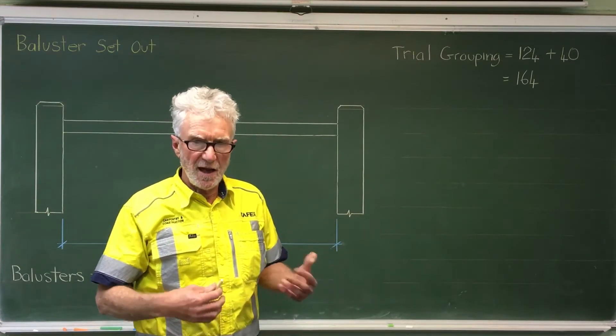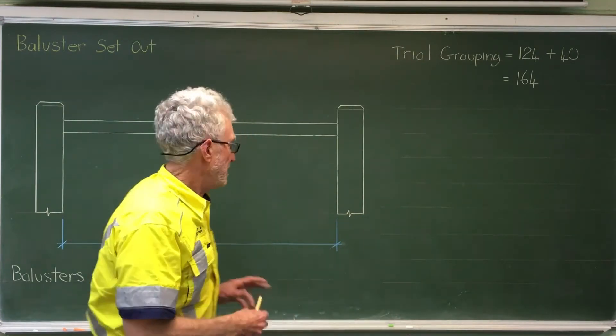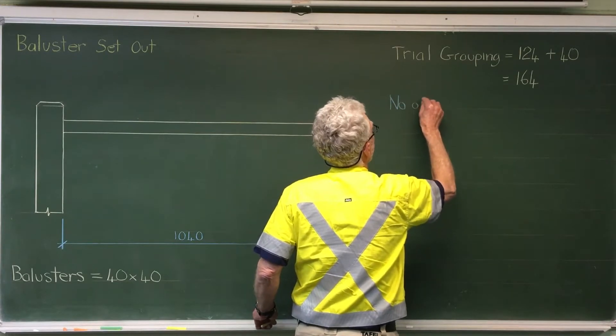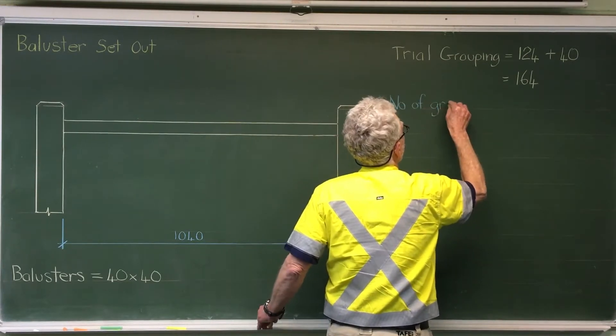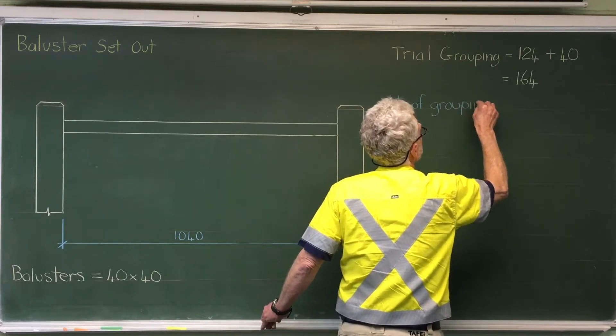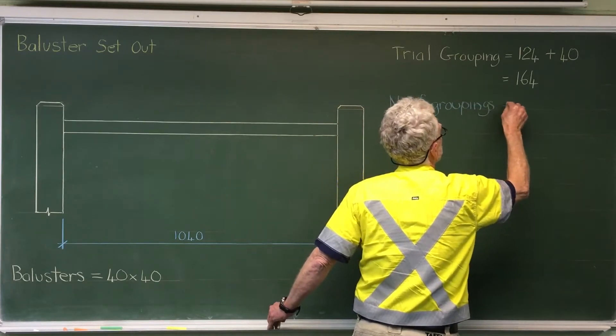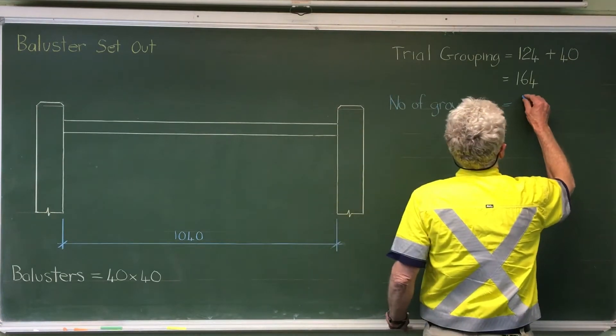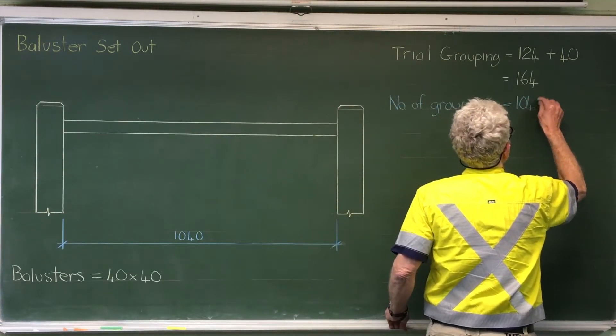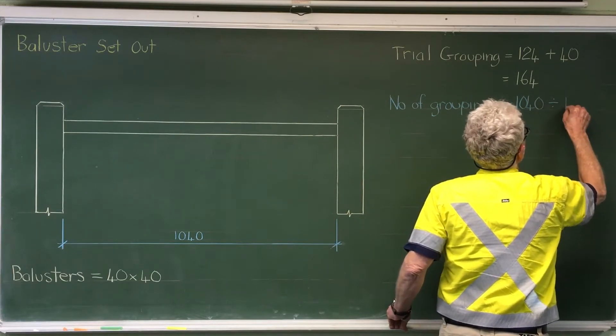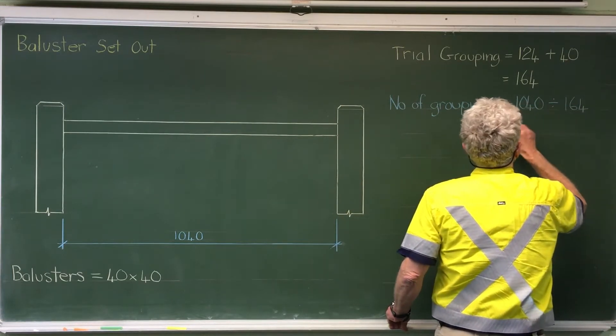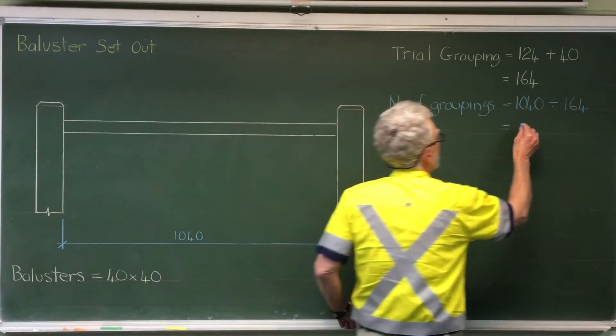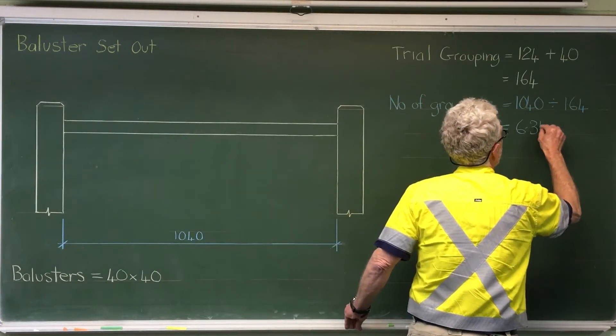Now we need to work out how many groupings we have in this space. So the groupings would equal the opening divided by the trial grouping. So that would be 1040 divided by 164. When I do that I get 6.341.